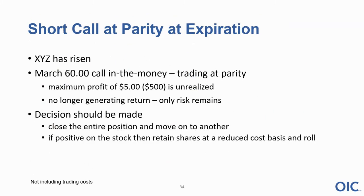At expiration, the stock has risen — we're in the money and it's trading at parity. The most we can make on that trade is $5, and that's where we are. This option is no longer generating any return; the only thing left on the table is risk. We've already achieved our maximum profit, assuming we close the position. Do we close that position and move on to another trade? Or if we like the stock, maybe we roll the trade out to reduce our cost basis, change our break-even point, change that maximum profit potential, and hang on to the shares or look for another trade.